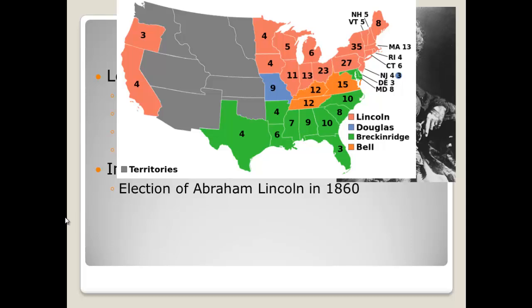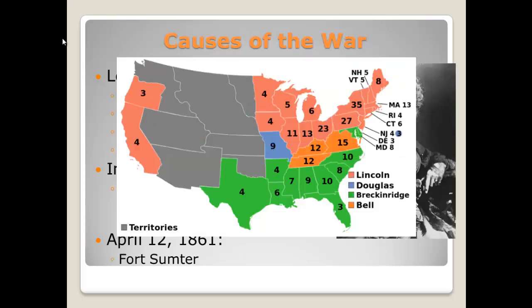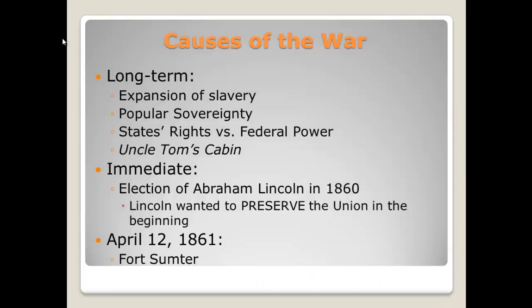Some immediate causes you should know: first and foremost, it is the election of Abraham Lincoln in 1860. If you take a look at the presidential map from 1860, you'll see that in not a single southern state did Lincoln win any electoral votes. The South feels that if a person can become president without winning a single southern state, why should we be in this country? Please keep in mind Lincoln and the Republicans did not want to fight the Civil War because of slavery — they fought it to preserve the Union. Lincoln did not campaign on abolishing slavery; he campaigned on keeping slavery from expanding. On April 12, 1861, the attack on Fort Sumter in South Carolina officially begins the Civil War.